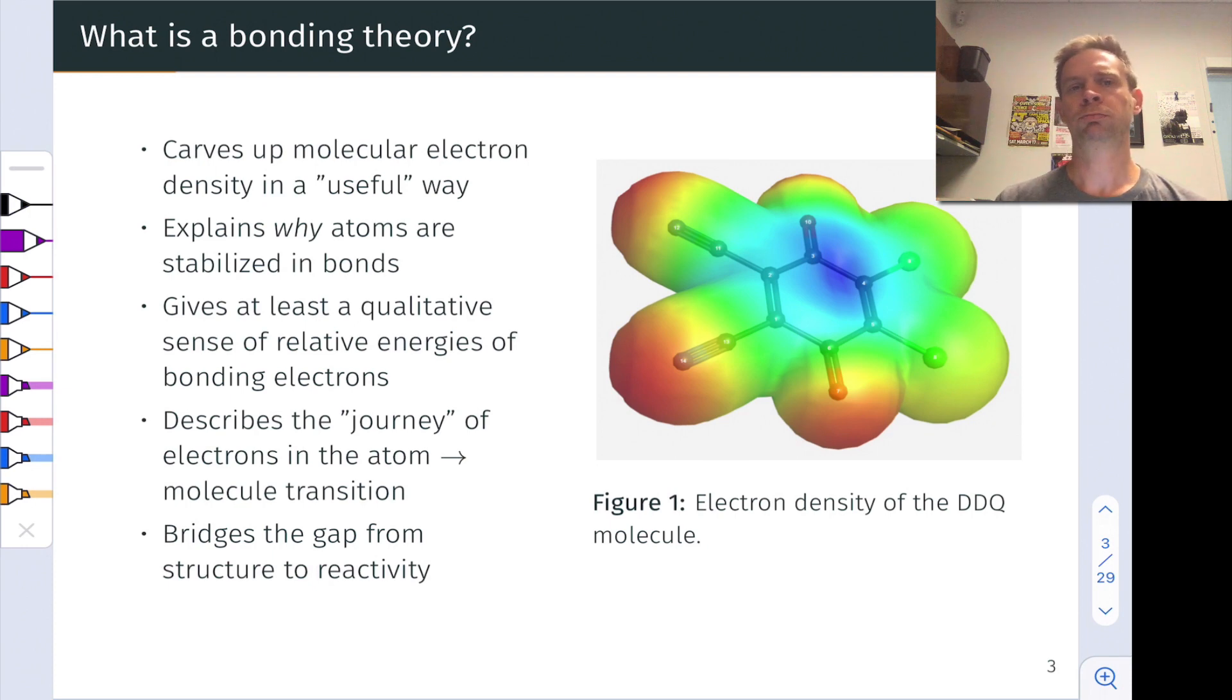You could take a molecule to a computer program, to a computational chemistry program with the nuclear positions and the number of electrons in the molecule and tell the program, hey, calculate the electron density for me. And if you do that, you can get an electrostatic potential map like you see on this slide in figure one. This is the electron density in the molecule DDQ. So red regions are relatively high electron density, blue regions relatively low electron density, and roughly speaking, these blobs that you see enclose where the electrons are located. Inside the blob is where the vast majority of electron density is located.